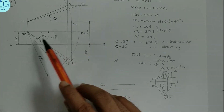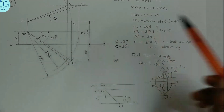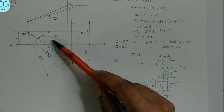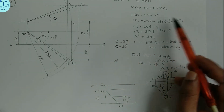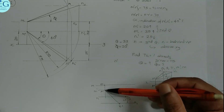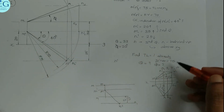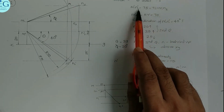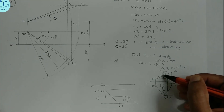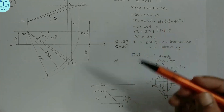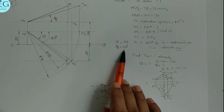We have the data: M is 20mm above, N is 25mm below, front view M'N' length is 70mm making an angle of 40 degrees. Using the true length M'N1', we rotate to find the true angle theta. The true length M'N1' equals 75mm, and the true angle theta is 37 degrees.